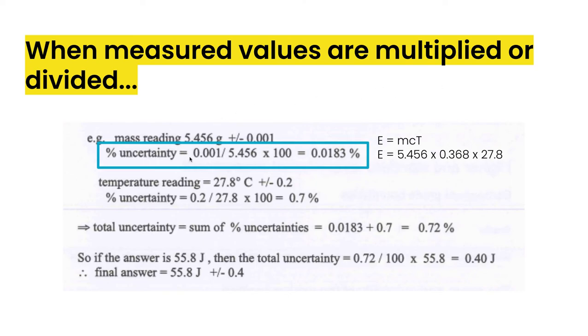So for the mass, we take the 0.001 divided by the mass measurement times 100, which gives us 0.0183%. If we do the same for temperature, we're taking the 0.2 uncertainty dividing by 27.8, which is our measurement times 100, which gives us 0.7%.